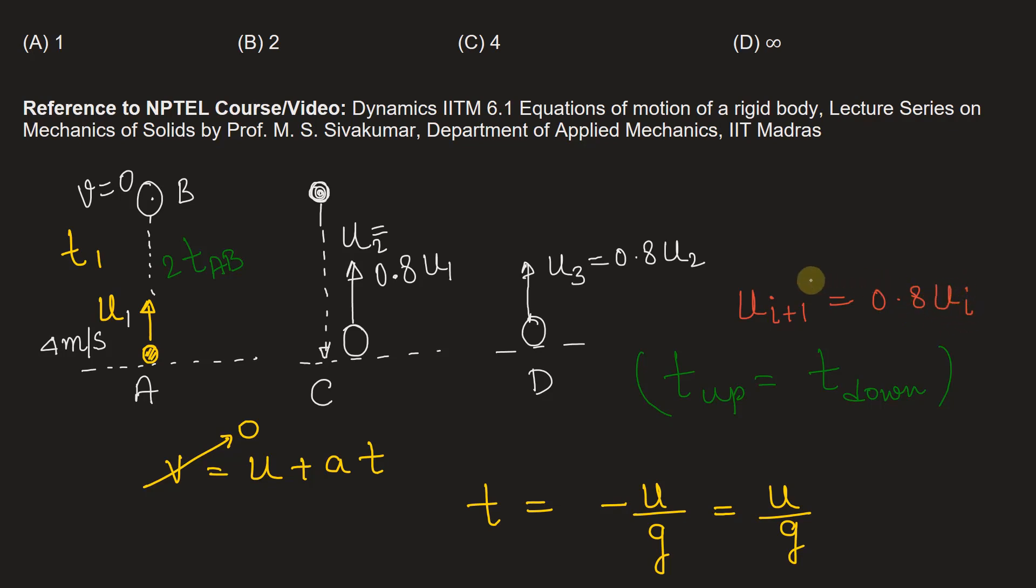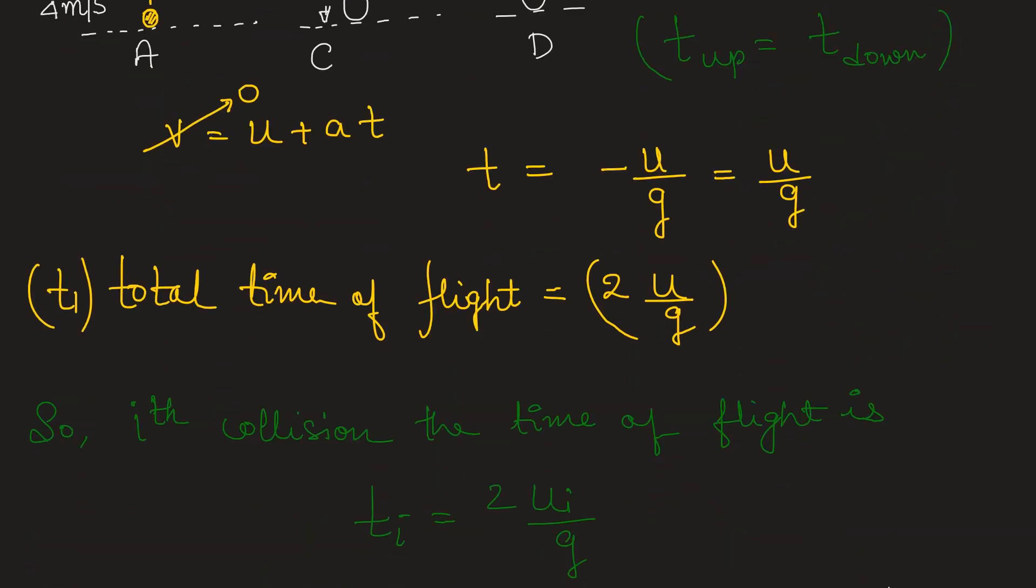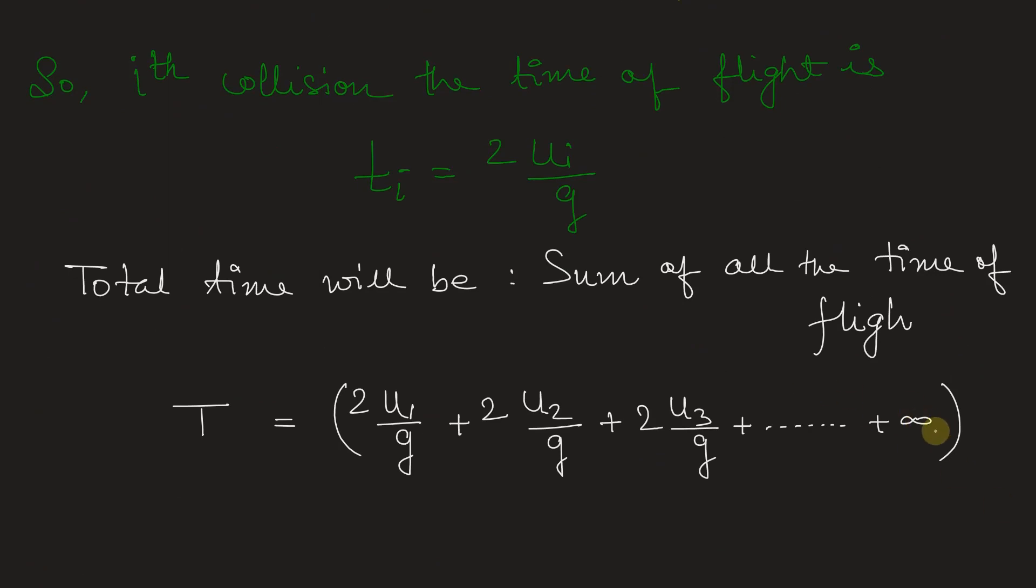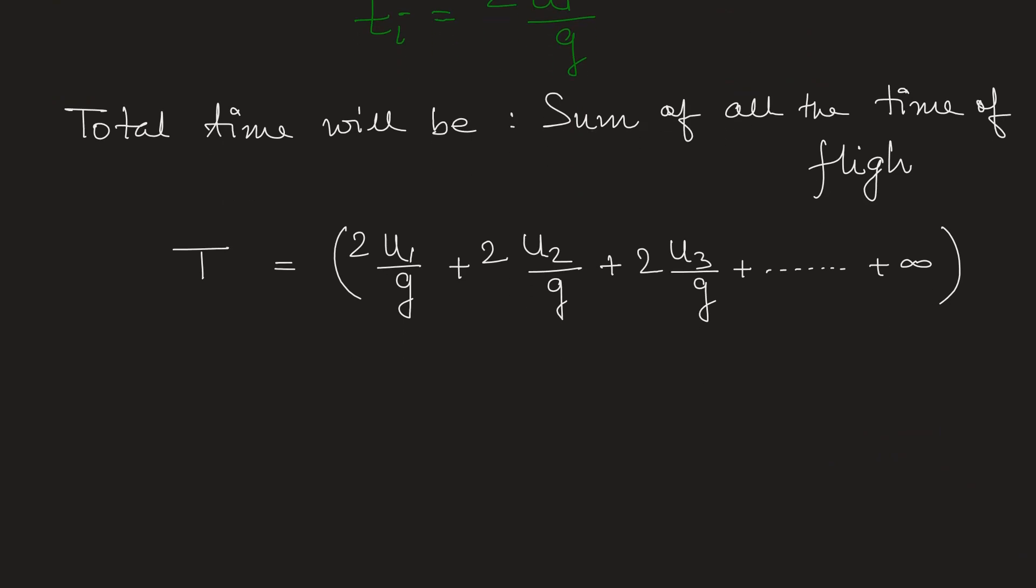So it will never come to zero. So we cannot directly find any velocity on which the ball will come to rest. It's an infinite long process. That's why this series will run up to infinity. So infinite number of collisions are possible here.